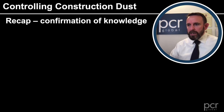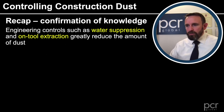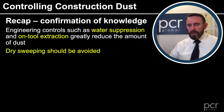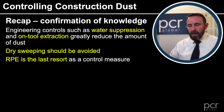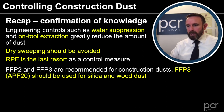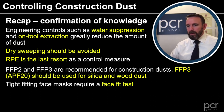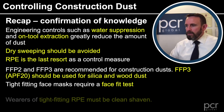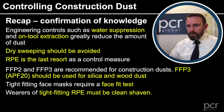Coming to the end of Module 4 — a recap and confirmation of knowledge. Engineering controls such as water suppression and on-tool extraction greatly reduce the amount of dust, as we saw from the videos. Dry sweeping should be avoided where possible — using a vacuum, damping down, and then a rake, shovel, and bucket. RPE will always be the last resort as a control measure. FFP2 and FFP3 are recommended for construction dusts, but FFP3, with an assigned protection factor of 20, should be used for silica and wood dust because they are more hazardous. Tight-fitting face masks require a face-fit test, and wearers of tight-fitting RPE must always be clean shaven. Thank you for watching, and good luck with your assessment.